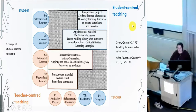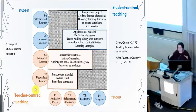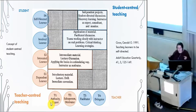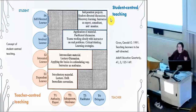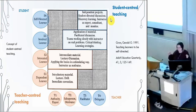For example, this first level, where learners are more like dependent learners and teachers are more like authority and expert, is something that happens in a usual lecture — lectures are very teacher-centered. The opposite is when students have an independent project. For example, a bachelor's thesis, in the very best way, could make them self-directed learners, where the teacher is not an authority or expert but more of a delegator, and the student is more self-aware of the teaching process.